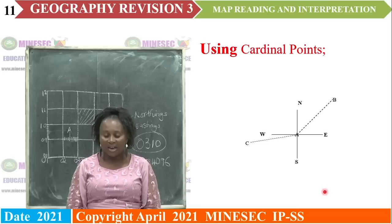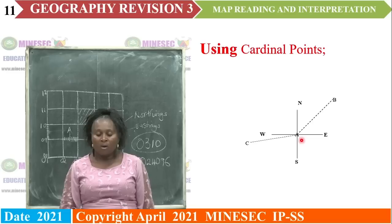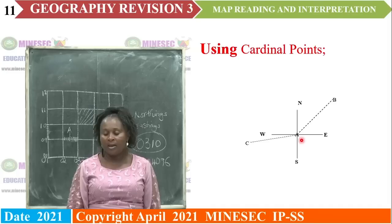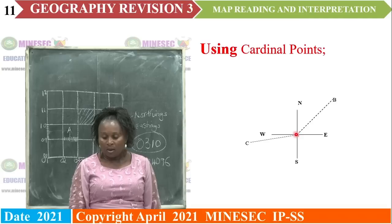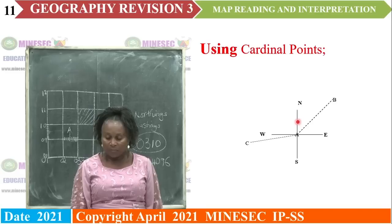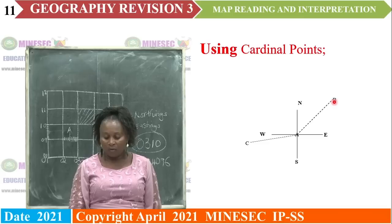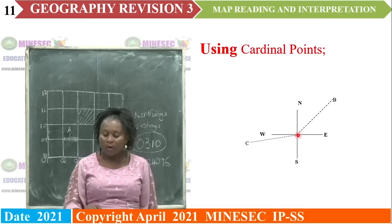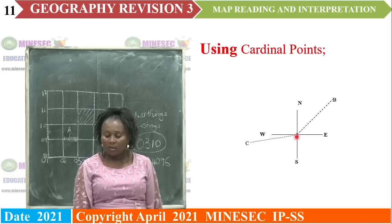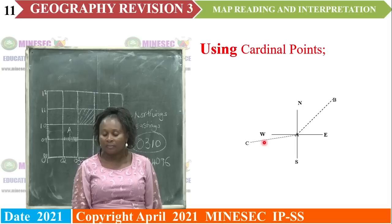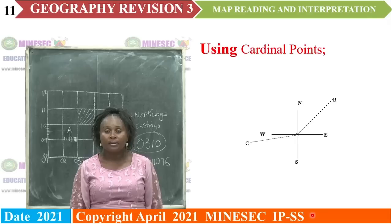What is the direction of point B from A? Our point of origin is A, and we superimpose the cardinal point on A and link it to point B. If we link it to point B, then point B will be to the northeast of point A. Look at point C from point A — point C is to the west or southwest of point A. You can use the cardinal point to get the direction of a place.